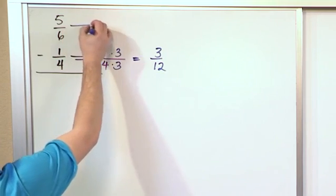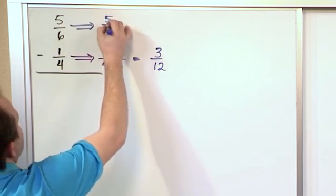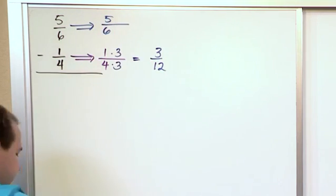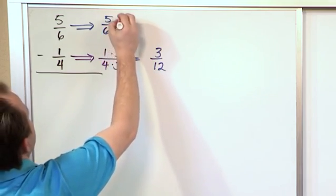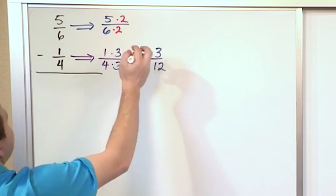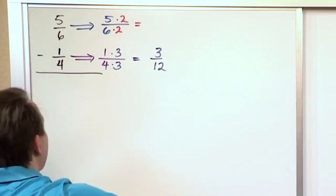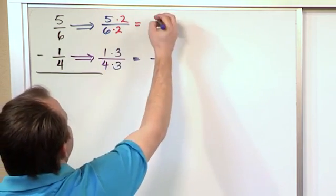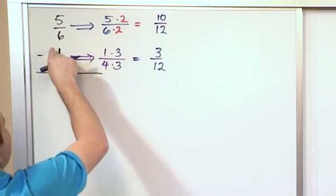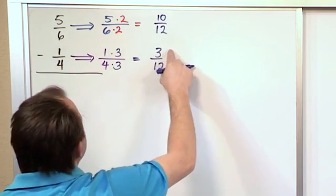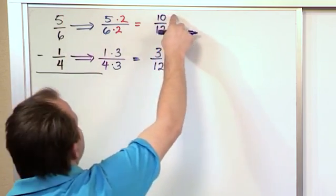And then I go and do the same thing up here. I say 5/6. Now I obviously want to get a common denominator of 12. So I need to multiply this times 2 and this times 2 because 6 times 2 is 12. So then what I will have on the top will be 10 and on the bottom will be 12. So now you see what I've done.